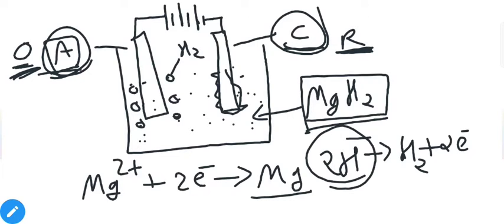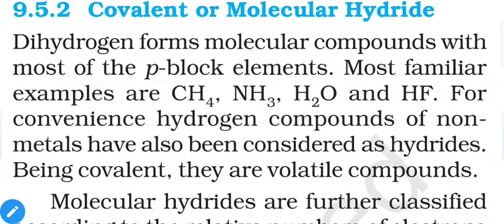Our second category is covalent or molecular hydrides. P-block elements usually form these because the electronegativity difference between hydrogen and p-block elements is comparatively negligible, allowing covalent bonds to form. If the electronegativity difference is high, an ionic bond is preferred; if it is comparatively less, covalent bonds are preferred. Examples of covalent hydrides include CH₄, NH₃, H₂O, HF, and so on.